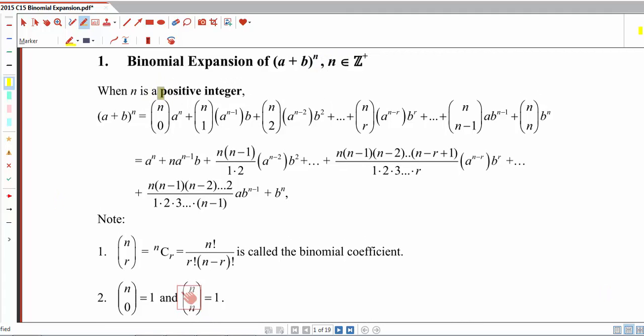So when n is a positive integer, the expansion of a plus b to the power of n is actually a finite series with n plus 1 terms. And you notice that the powers of a are in descending order, whereas the powers of b are in ascending order. So the sum of powers of a and b is always equal to n.